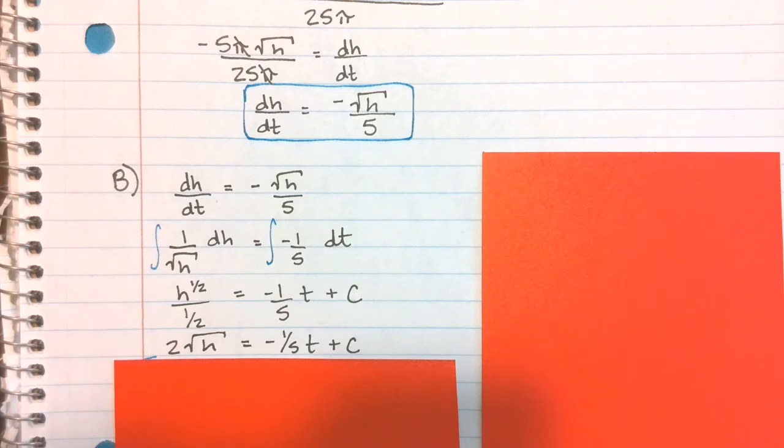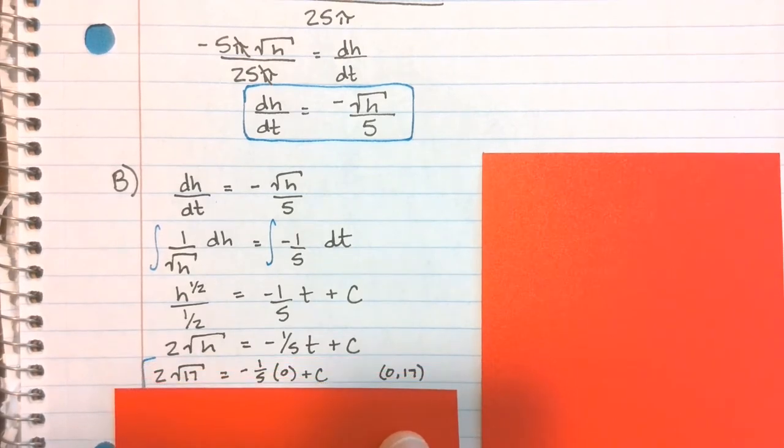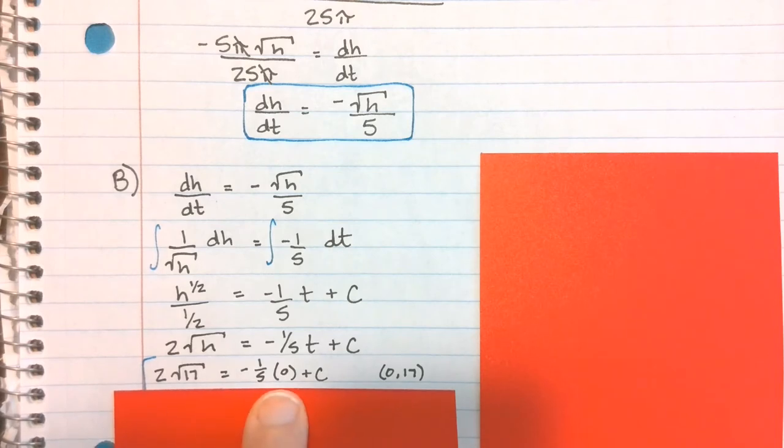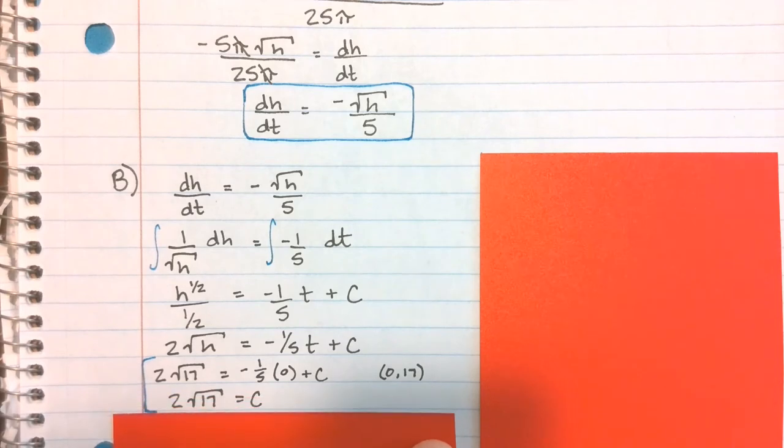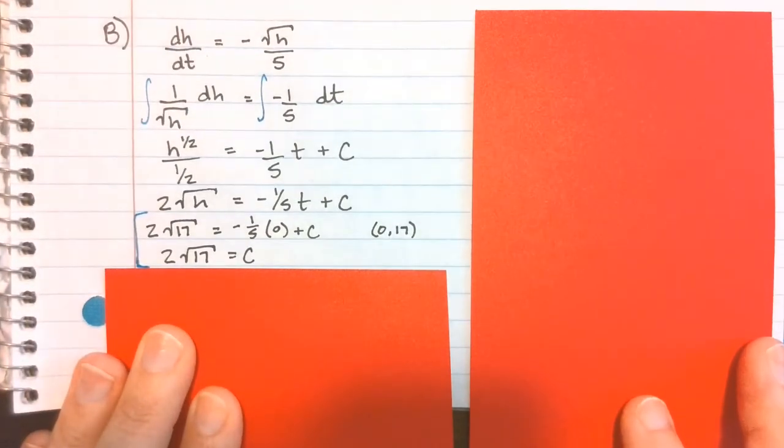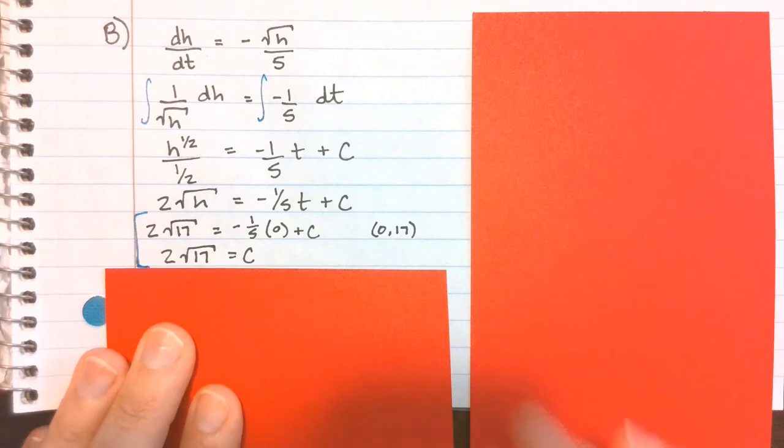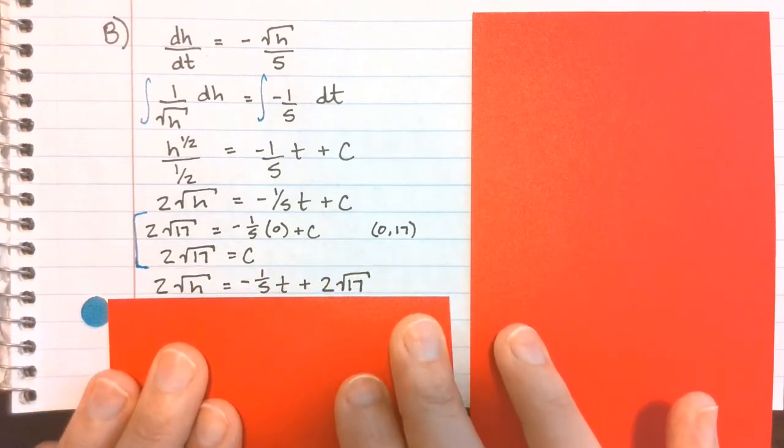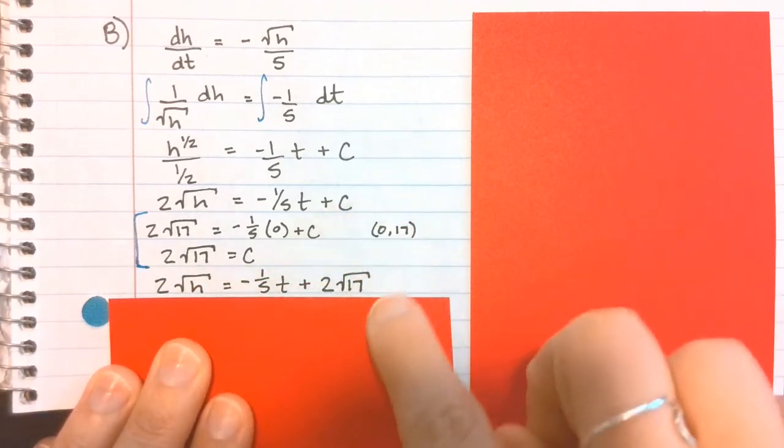From here you can go ahead and solve, but since this is really easy to deal with right now, I went ahead and plugged in my specific value, plugging in 0 for t and 17 for h. At this point, since I know this negative 1/2 times 0 is just 0, I can really easily see that my c value has to be 2√17. So it's a little easier to solve for c from there than if I solved for h first. Once I know what c is, I just put it back into the equation.